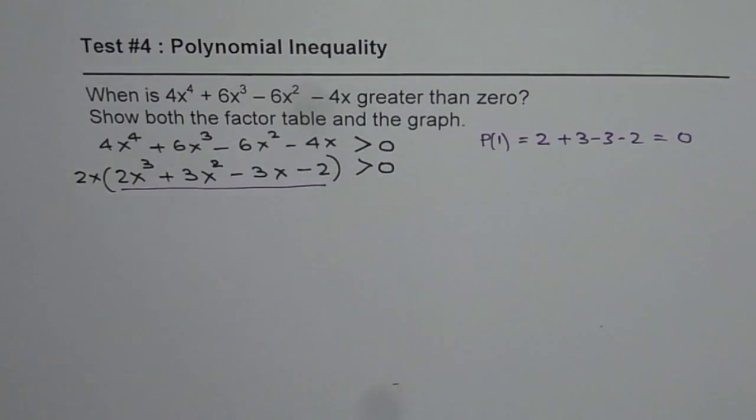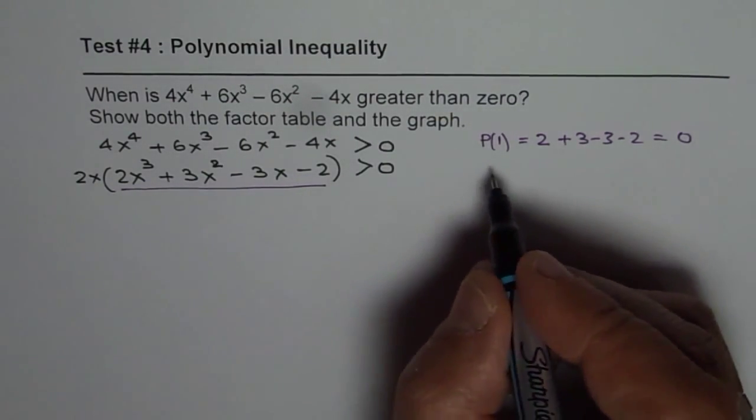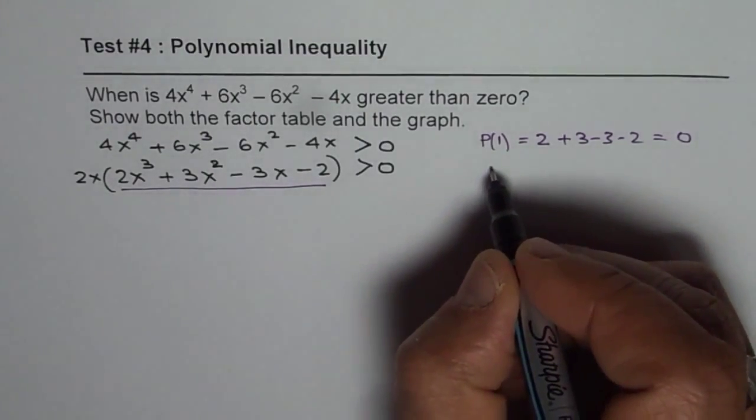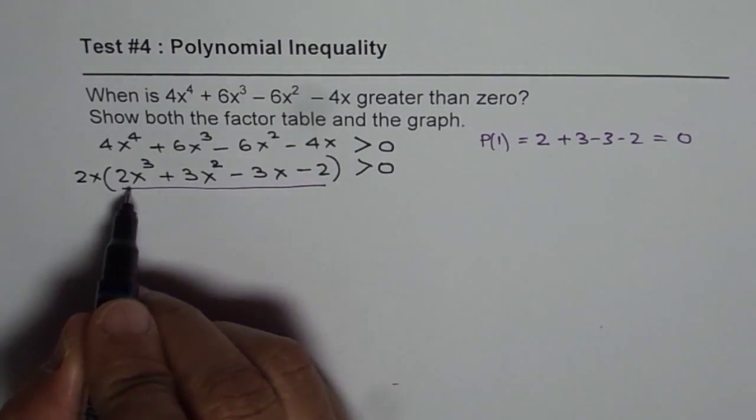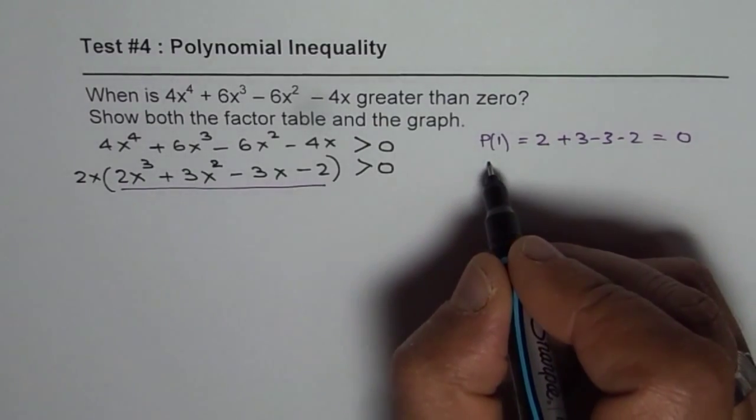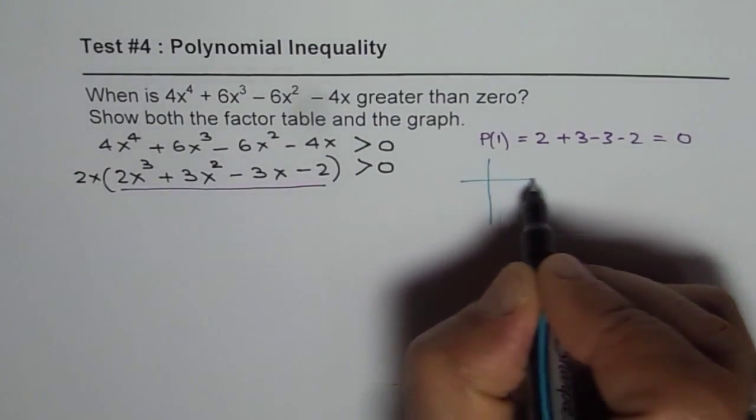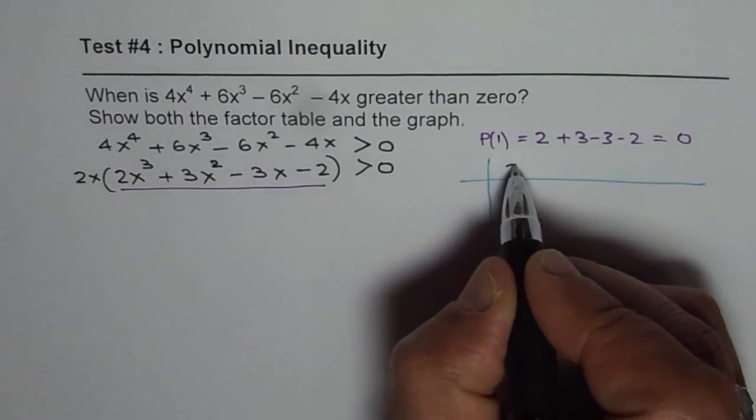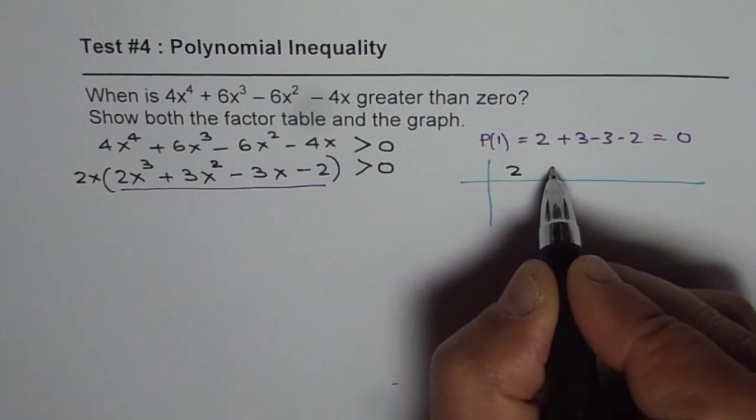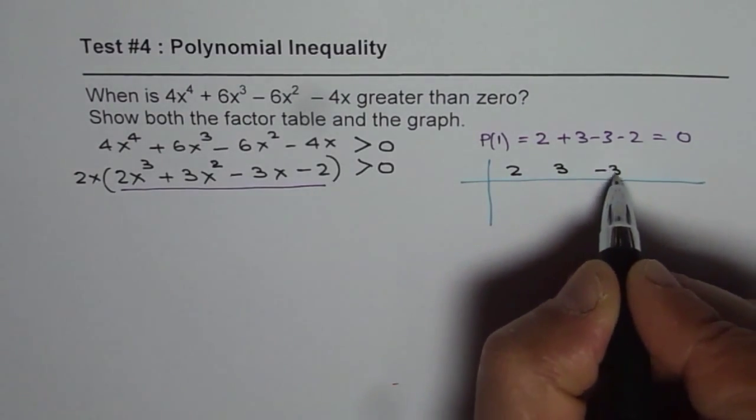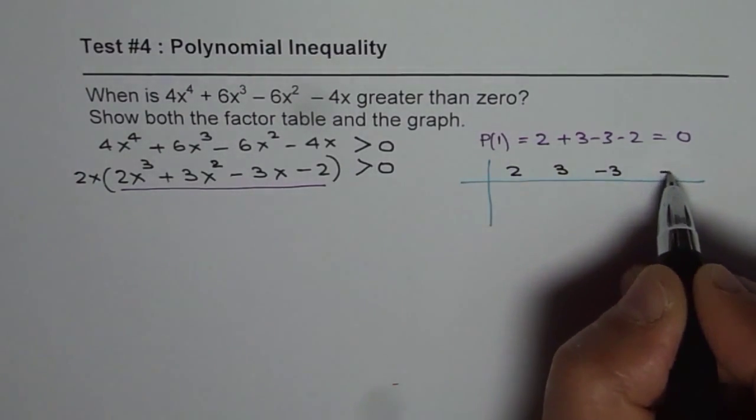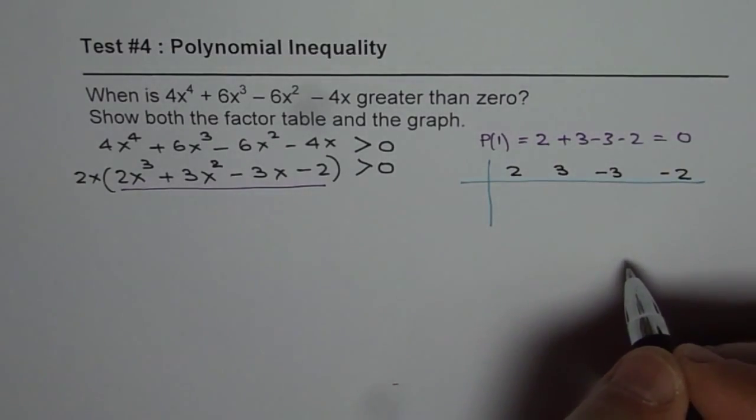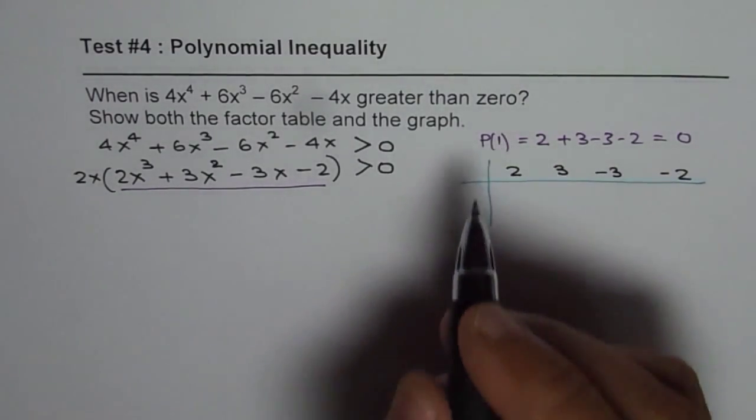So we can now perform synthetic division and then find the other factors. So let's perform the synthetic division to factor 2x cube. For that, let me write down these coefficients which are 2, 3, minus 3 and minus 2.